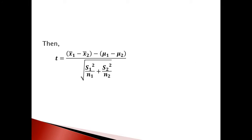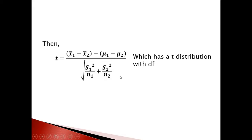We can replace σ₁ and σ₂ using s₁ and s₂. The t-statistic equals x̄₁ minus x̄₂ minus (μ₁ minus μ₂), over the square root of s₁² over n₁ plus s₂² over n₂, which has a t-distribution with a calculated degree of freedom.